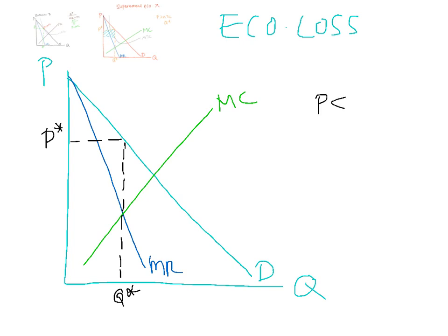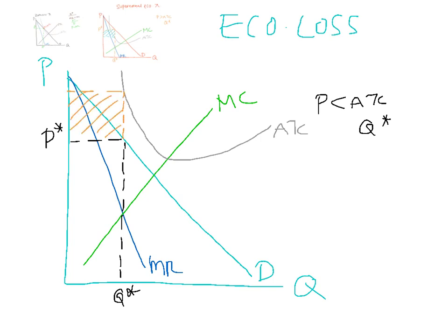For economic loss, price must be less than average total cost at Q star. So again, draw it in such a way to ensure that that happens. Average total cost is on top, continues to fall, touches the MC curve, then moves up. This firm will be making an economic loss equal to this area over here.